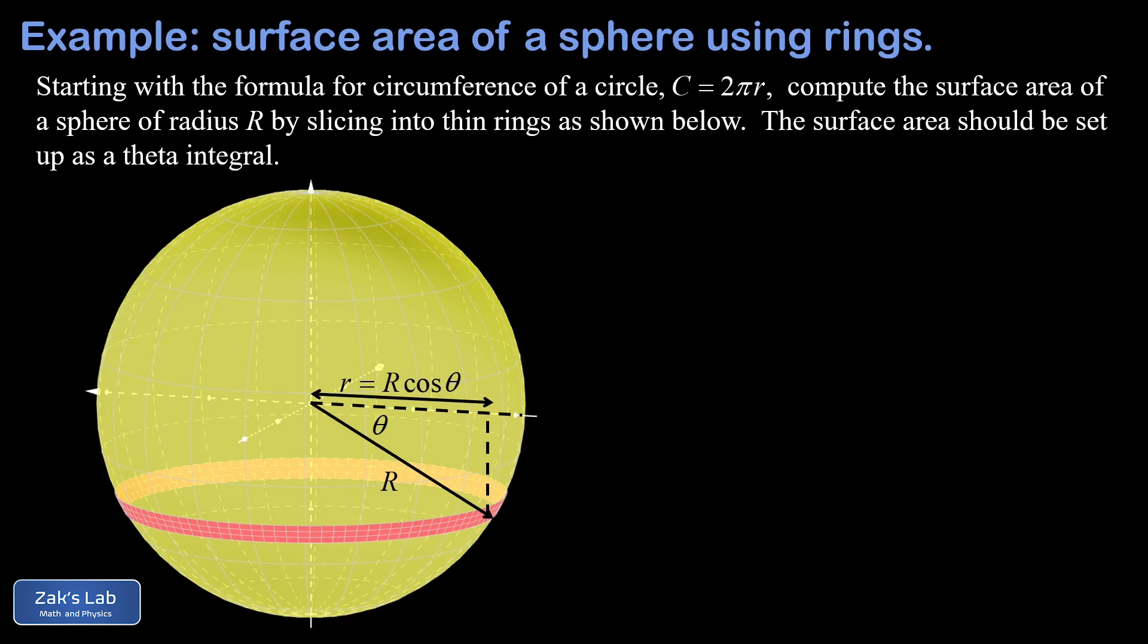Probably the trickier part of figuring out the dimensions of this individual ribbon is to figure out the width. Because we're trying to phrase everything in terms of an integration variable of theta, we visualize the infinitesimal angle swept out by the width of that ribbon.